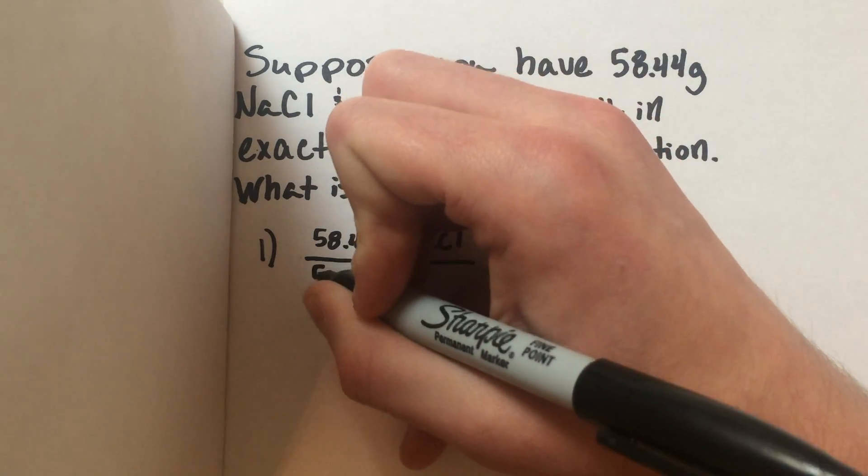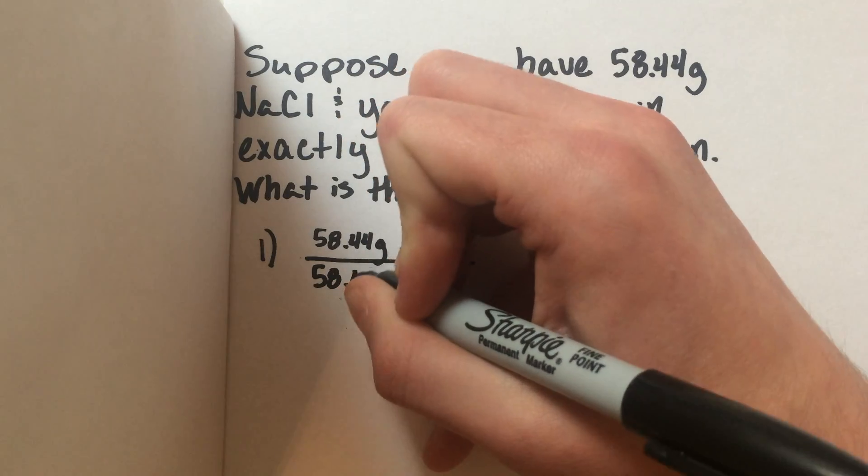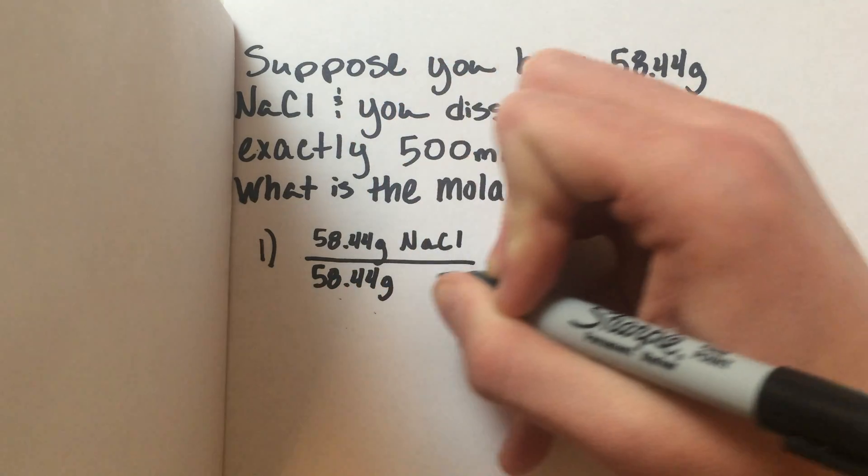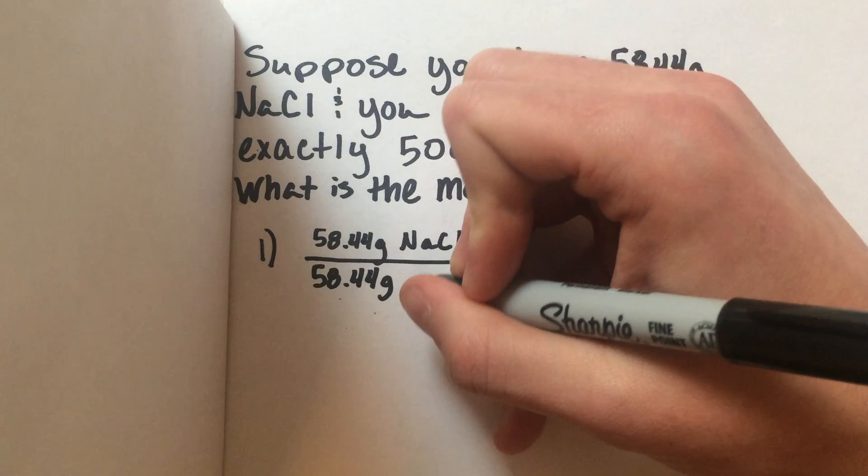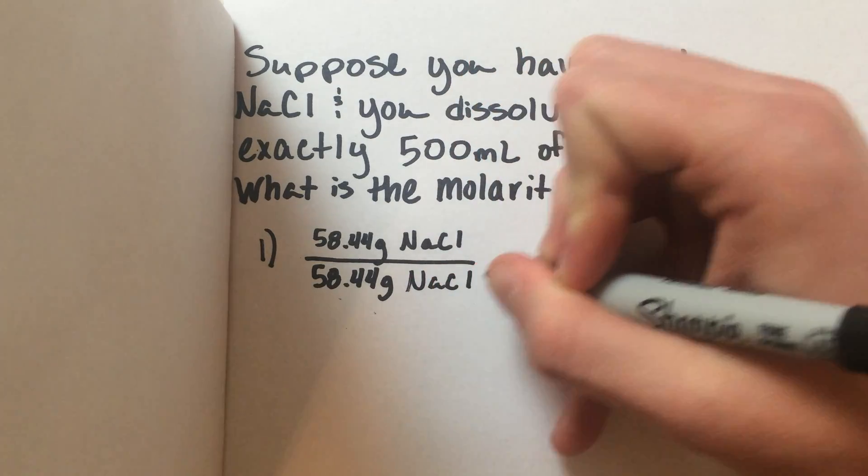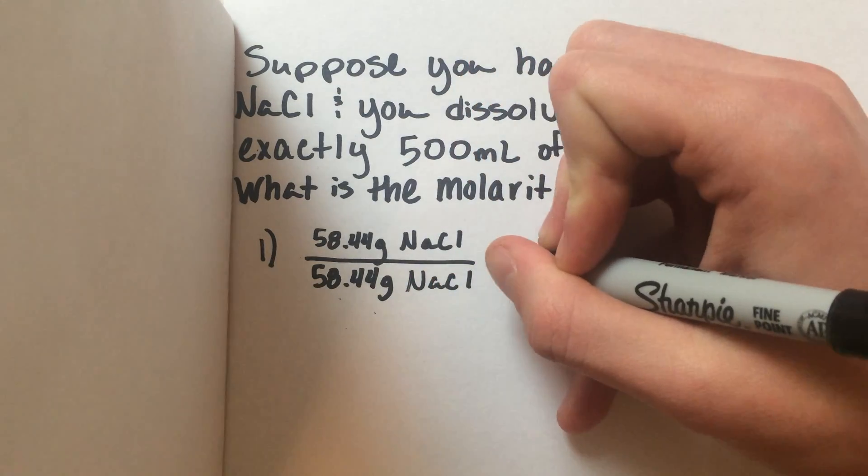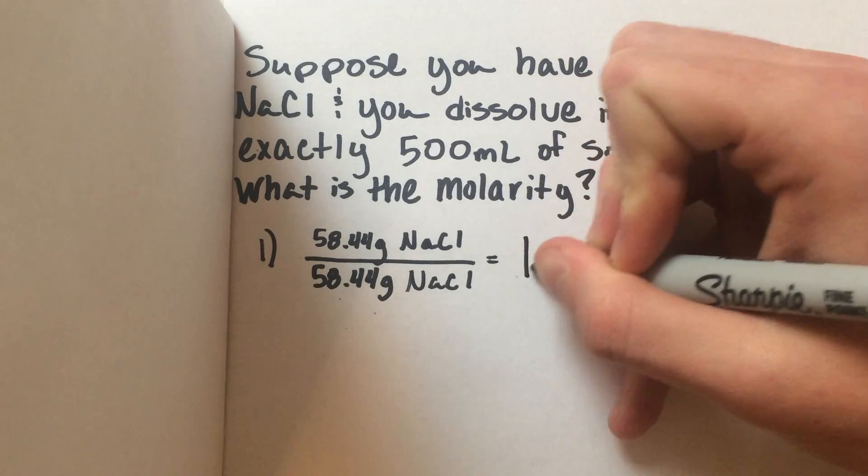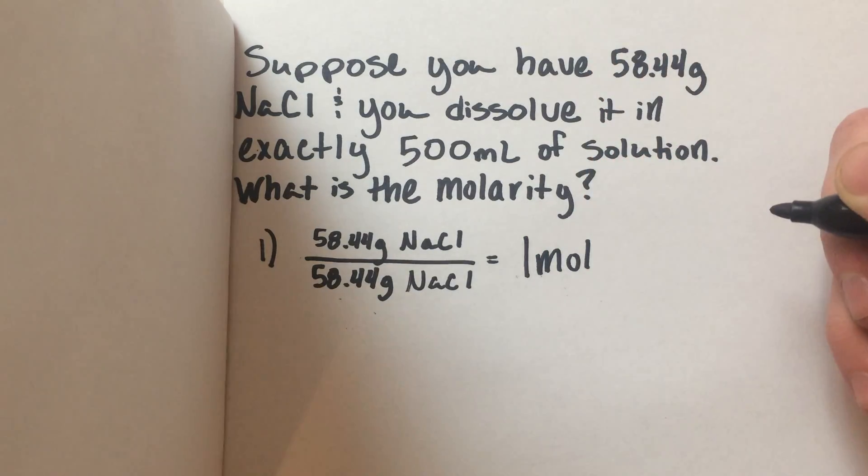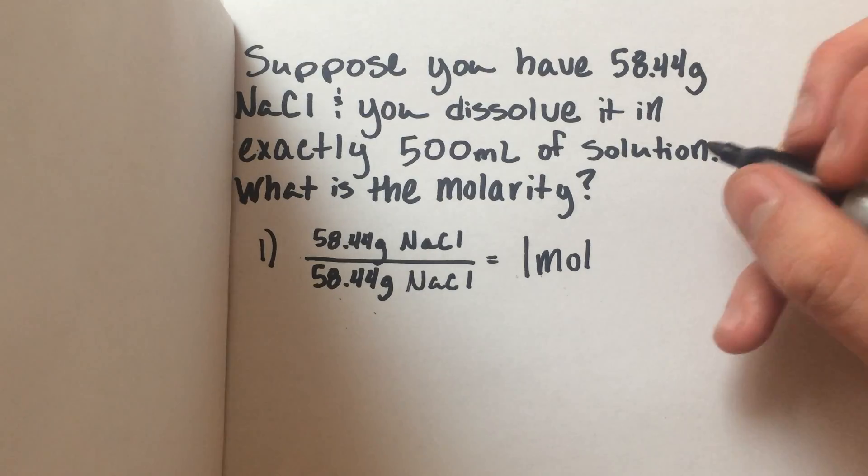There are 58.44 grams per mole of sodium chloride, so you're left with just one mole. Now you're going to want to find how many liters you have.